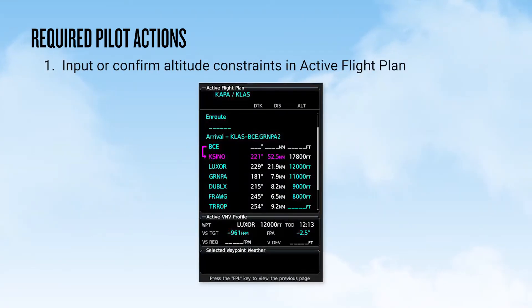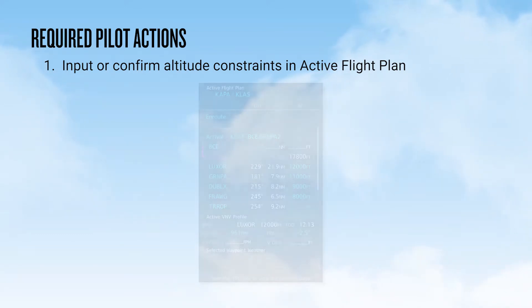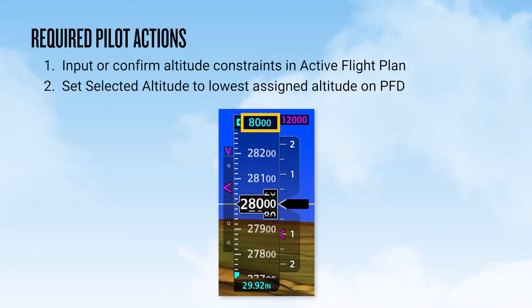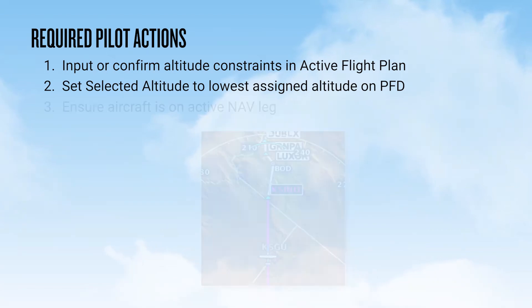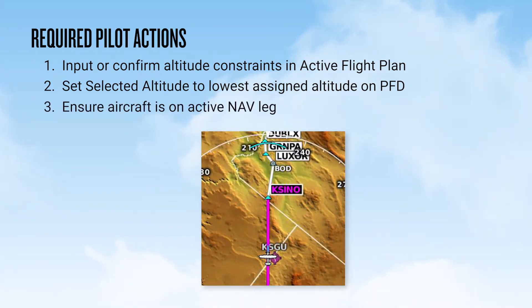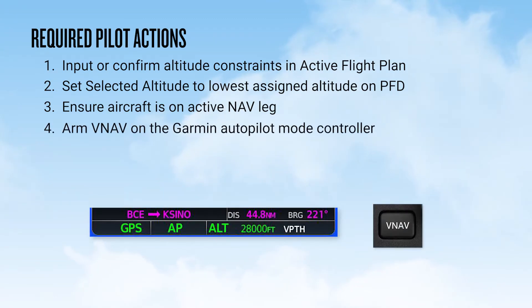There are certain pilot actions required to ensure successful employment of VNAV. First, you need to input or confirm that altitude constraints are shown in the active flight plan — these could be entered by the pilot or populated automatically as part of an instrument procedure. Second, you must set a selected altitude that is lower than the current altitude. For ATC-controlled operations, the altitude selected should be the lowest altitude to which you were cleared to descend. Third, you must ensure that the aircraft is on an active nav leg. And finally, ensure that VNAV is armed on the Garmin Autopilot Mode controller, if so equipped.